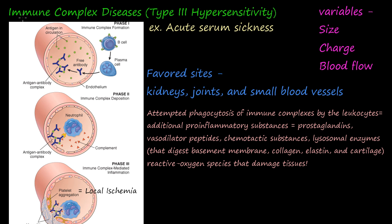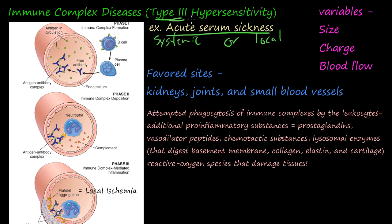In this video we're going to discuss immune complex diseases, or the hypersensitivity type 3 diseases. The best example is acute serum sickness, where high quantities of horse antibodies or antigens are injected into a human. There are two types: the systemic and the local type 3 hypersensitivity reactions. We'll first talk about the systemic — what happens when it's all over your body — and then discuss it in the local sense. There are three phases.